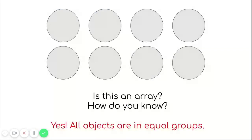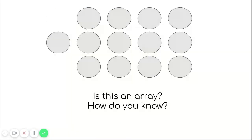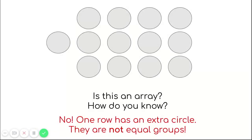Let's do one more for practice. Take a look at this picture. Is this an array? How do you know? Take a minute to think about your answer, tell someone at home, or write it down. This is not an array. You can see that the middle row has an extra circle, so they are not in equal groups.